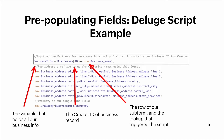Here's the Deluge script. We select the variable that's going to hold all our business information — in this case we call it `businessInfo`. The creator ID of the business record will be `ID`, and then we reference the row of our subform and the lookup that triggers the script. We use the word `row` before the field — this is how we let the Deluge script know that we're talking about a specific row within a subform.